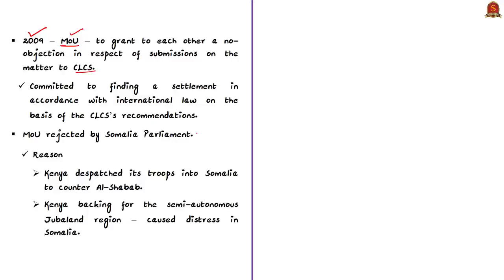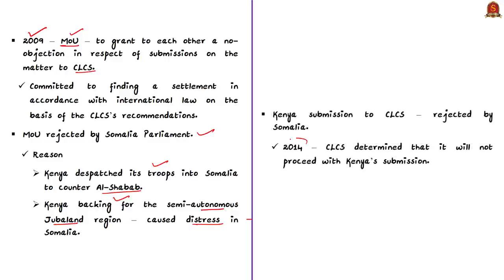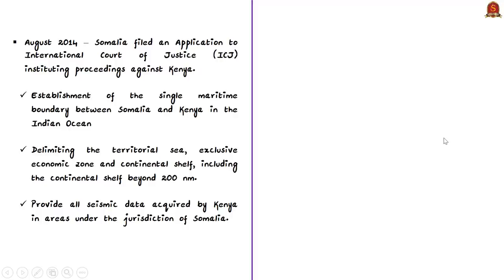The reason stated by the author is that Kenya dispatched its troops into Somalia to counter al-Shabaab and also backed the semi-autonomous Jubaland region, causing distress in Somalia. When Kenya made its submission to CLCS, Somalia rejected it. In 2014, CLCS determined it would not proceed with Kenya's submission. In July 2014, Kenya asked CLCS to allow another presentation. In August 2014, Somalia filed an application to the International Court of Justice (ICJ), located in the Netherlands, to institute proceedings against Kenya.